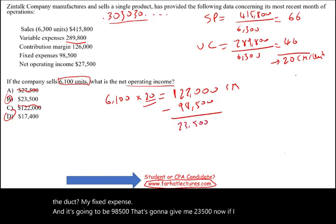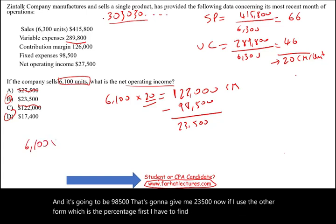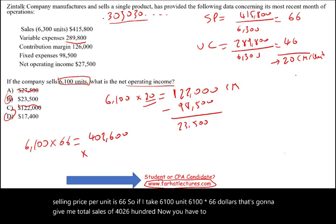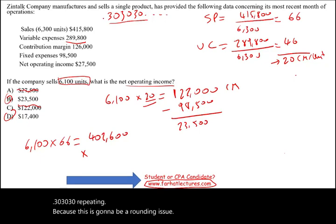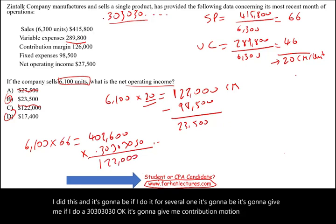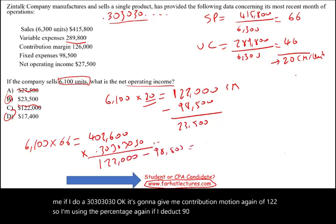Now, if I use the percentage formula, I first find total sales: 6,100 units times $66 selling price equals $402,600 in total sales. Multiplying by the contribution margin ratio of 0.3030 repeating gives a contribution margin of $122,000 again — there is a rounding issue with the repeating decimal, but the result is the same. Deducting fixed cost of $98,500 gives $23,500, the same answer. So both methods — unit contribution margin and the CM ratio percentage — yield the same result.